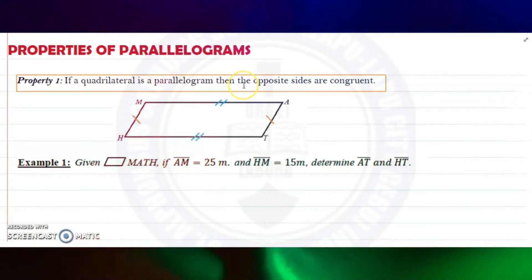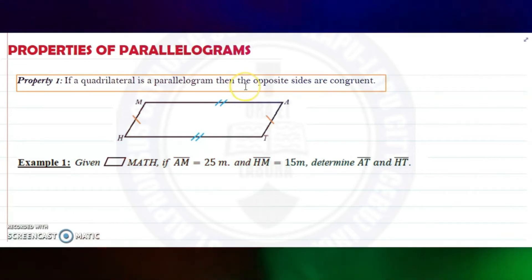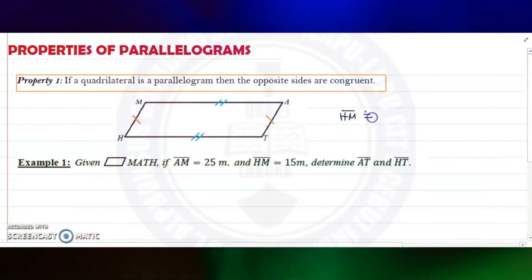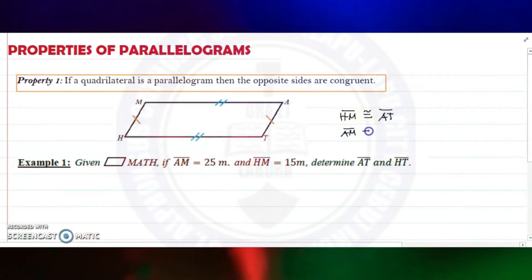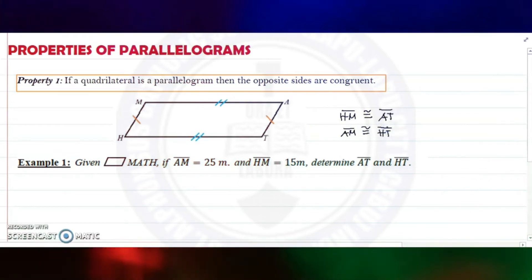Property number one: if a quadrilateral is a parallelogram, then the opposite sides are congruent. Meaning HM is congruent to the opposite side AT, and AM is congruent to HT.